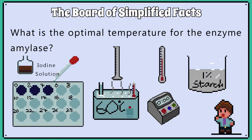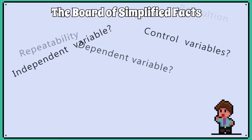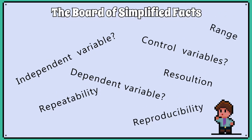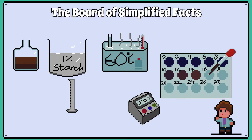This WJC-specified practical investigates what is the optimal temperature of the enzyme amylase. We will go through some potential questions they could ask in an exam and the scientific terms you should be using when discussing this practical investigation. We won't go through the method, but the illustrations should help remind you of how the practical is conducted.